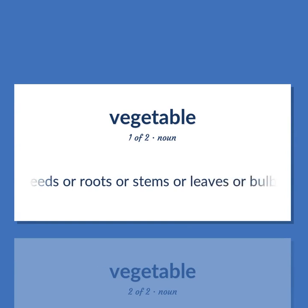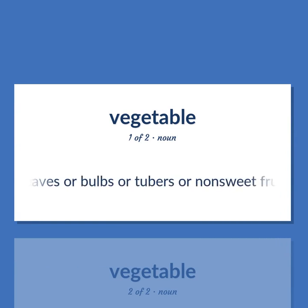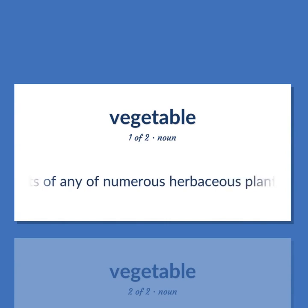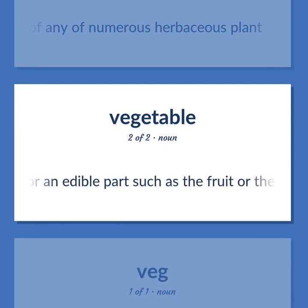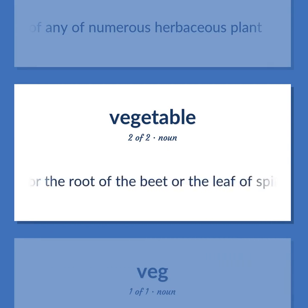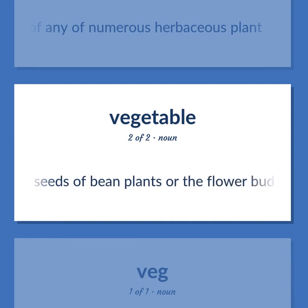Vegetable: Edible seeds, roots, stems, leaves, bulbs, tubers, or non-sweet fruits of any of numerous herbaceous plants. Any of various herbaceous plants cultivated for an edible part, such as the fruit or root of the beet, the leaf of spinach, the seeds of bean plants, or the flower buds of broccoli or cauliflower.